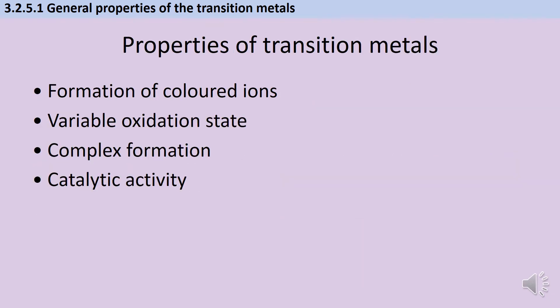Having incomplete d subshells is directly responsible for these four properties that we expect transition metals to have. There's a bit more detail about each of these in the next four videos. We expect transition metals to form colored ions, have variable oxidation states, form complexes or complex ions, and have catalytic activity.